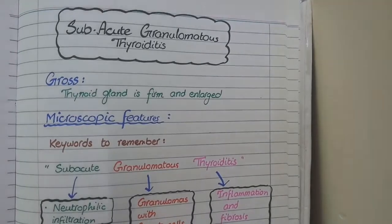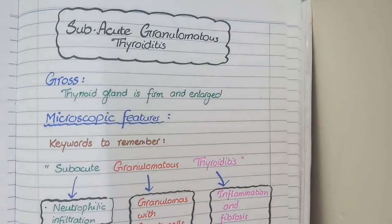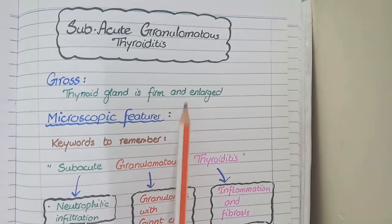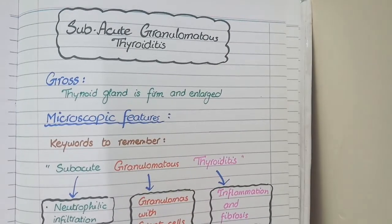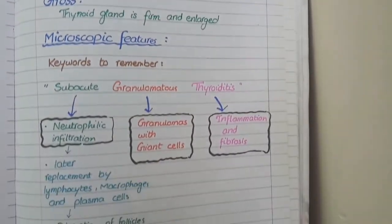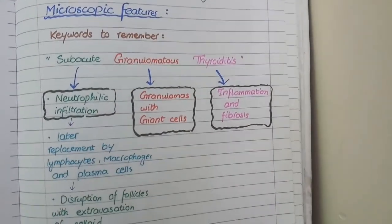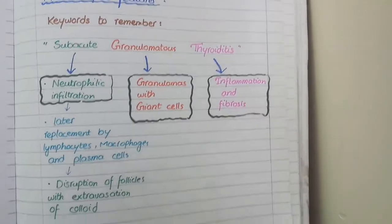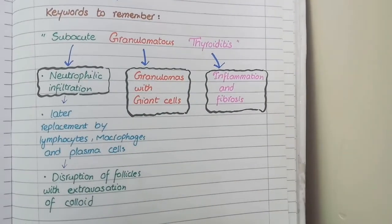The next type of thyroiditis is subacute granulomatous thyroiditis. In this thyroiditis also, the thyroid gland is firm and enlarged. For microscopic features, the keywords to remember are simply learnt from its name: subacute granulomatous thyroiditis.